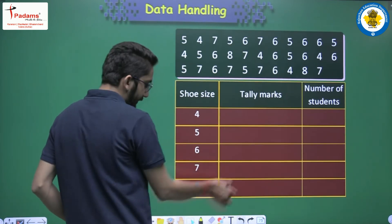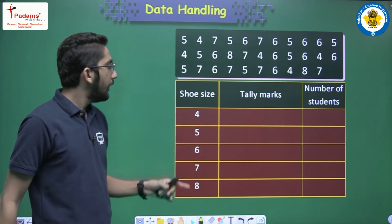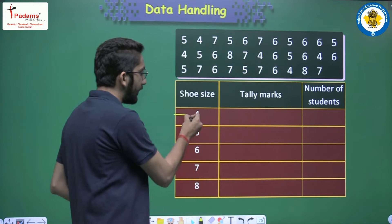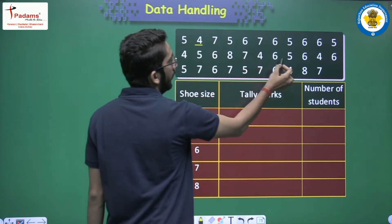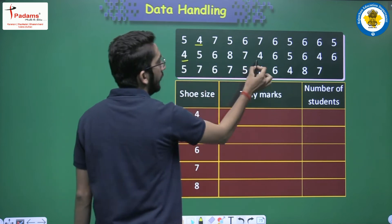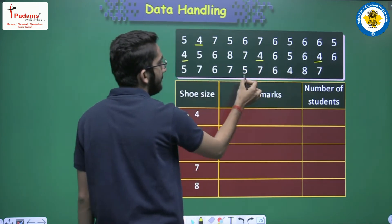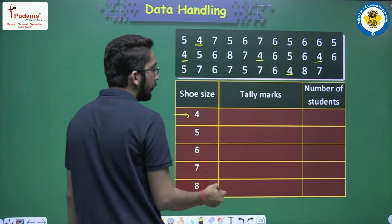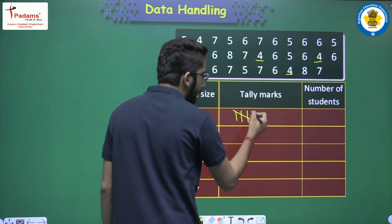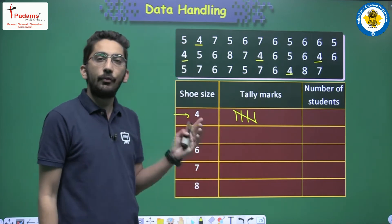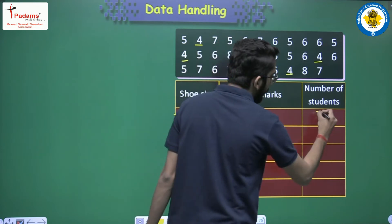First, we count shoe size 4 — there are 5 students. So we draw 4 vertical lines and cross the 5th as a tally mark. Number of students with shoe size 4 is 5.